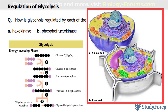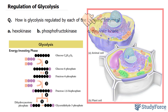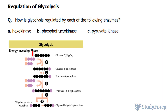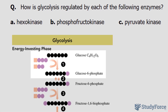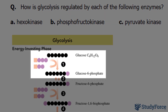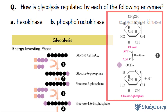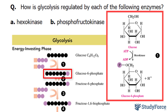Throughout the process, which happens to take place in the cytosol of the cell, it degrades the 6-carbon glucose molecule to two 3-carbon pyruvate molecules. In the very first reaction of glycolysis, phosphorylation takes place. This is where a phosphate group is transferred from ATP to glucose, forming glucose 6-phosphate.